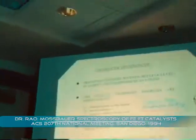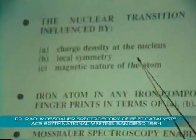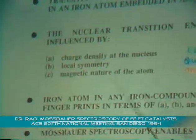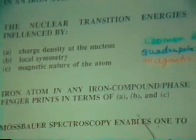The Mössbauer spectroscopy is a very potent and sensitive experimental technique which can measure transition energies between nuclear levels in an iron atom which has been embedded in any solid. The transition energies are influenced by the charge density of the nucleus, the local symmetry of the iron atom, and its magnetic nature. These three parameters can be characterized through Mössbauer spectroscopy.